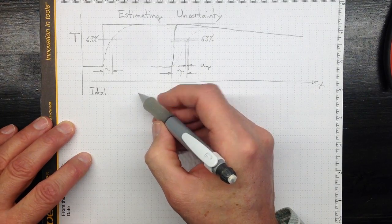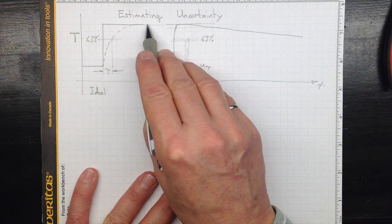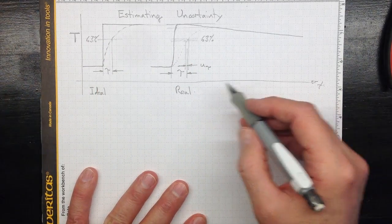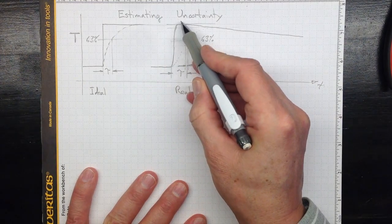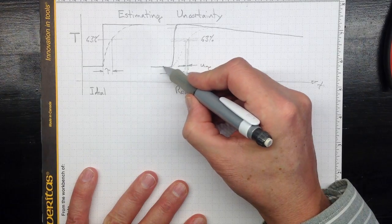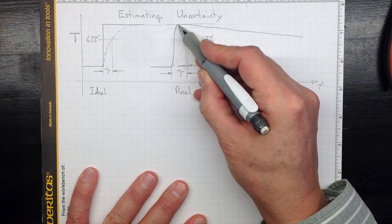However, in a real measurement, we have a hard time creating an absolute step function. Probably the actual temperature that our sensor is responding to went up sharply, and in the case of our coffee cup example.